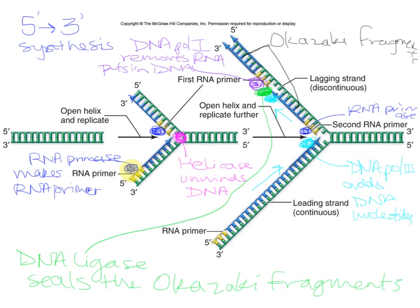To summarize: RNA primase places the RNA primer on both strands, but on the lagging strand there are many more priming events. DNA polymerase III is the main replication enzyme, adding all DNA nucleotides — continuous on the leading strand, discontinuous on the lagging strand, forming Okazaki fragments. DNA polymerase I removes the RNA primer and replaces it with DNA. Finally, DNA ligase seals the Okazaki fragments to make a complete DNA strand.